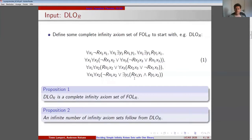In our paper, we prove Proposition 1: DLOR is a complete infinity axiom set of FOLR. We prove Proposition 2: an infinite number of infinity axiom sets follow from DLOR. In consequence, we can decide an infinite number of infinity axiom sets by proving that they follow from DLOR, which proves they are satisfiable as well.